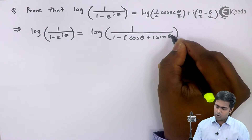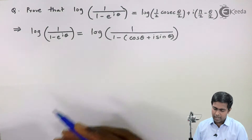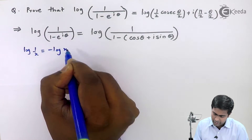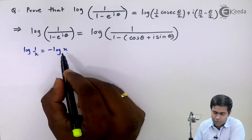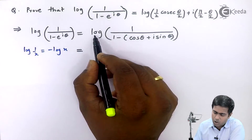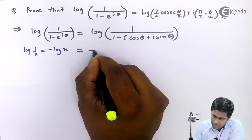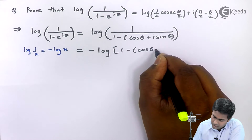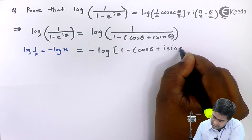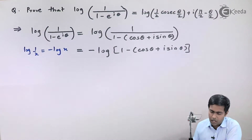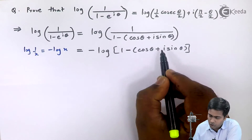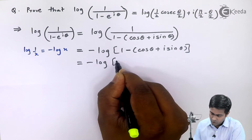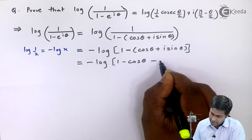In logarithm we have the rule that log(1/x) equals minus log(x). Applying this formula, the expression becomes minus log of 1 minus cos(θ) plus i·sin(θ). Due to this minus sign, all the signs inside the bracket change, giving minus log of 1 minus cos(θ) minus i·sin(θ).